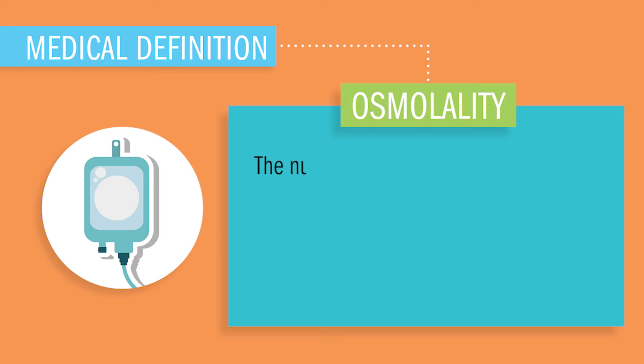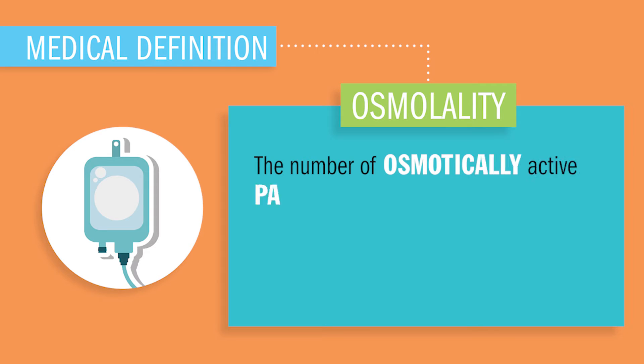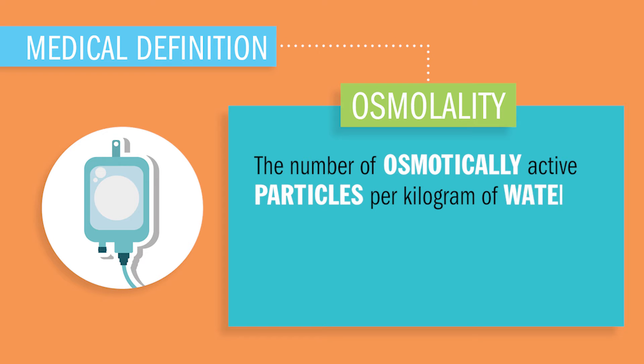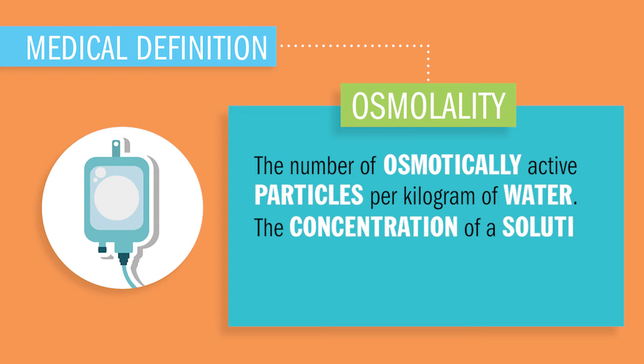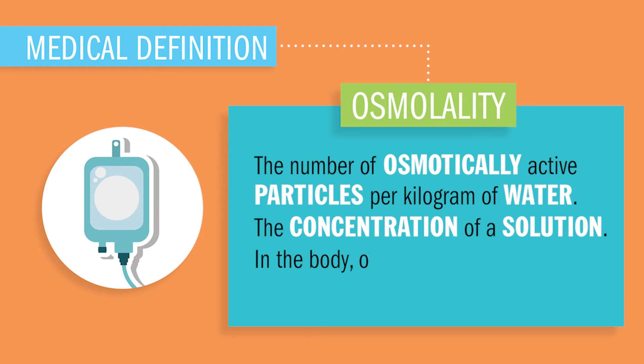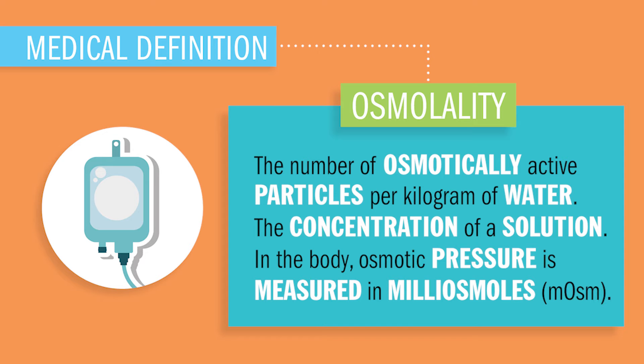We'll get to that later in our kidney videos. Our next term is osmolality, which refers to the number of osmotically active particles per kilogram of water. It's simply the concentration of the solution — basically how heavy and concentrated it is. Osmotic pressure is measured by millimoles, or MOSM.